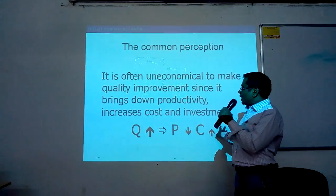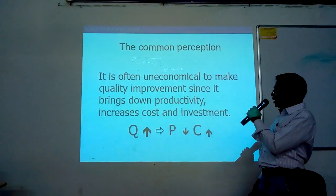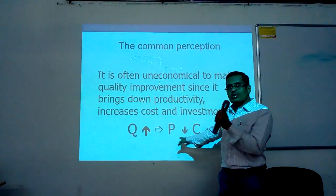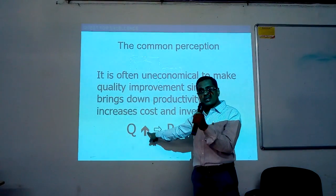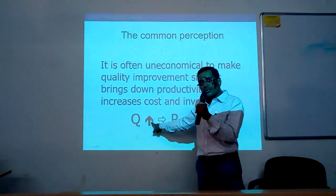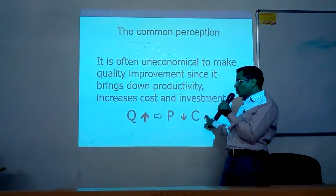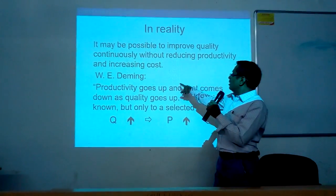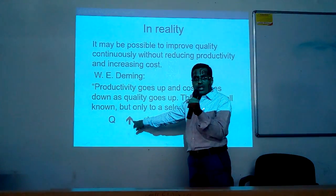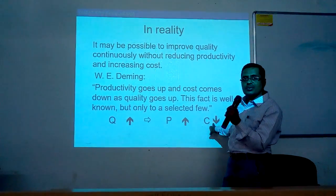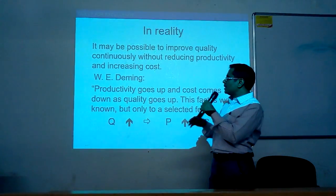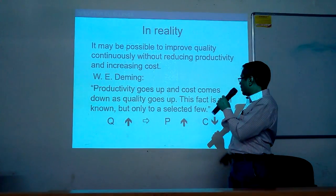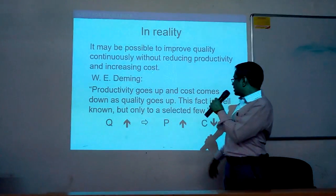There is a common perception that if you want to improve quality, productivity will decrease and cost will increase. But what is the reality? In reality, even if quality is improved, productivity also improves and cost comes down. That is the famous Deming statement: productivity goes up and cost comes down as quality goes up. This fact is well known, but only to a selected few.